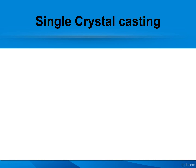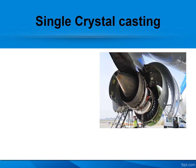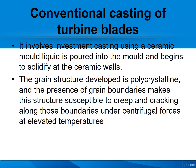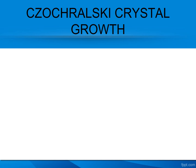Next is single crystal casting. The necessity for this is that turbine blades made for military and jet engine purposes suffer creep fracture due to fatigue when made with conventional casting, which produces a polycrystalline grain structure. Creep and cracking along grain boundaries form at elevated temperatures. To avoid this, especially in turbine blades, we use the single crystal growth technique.